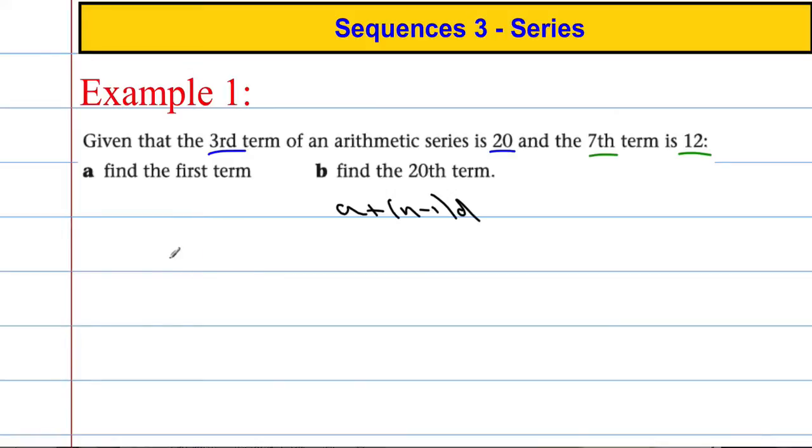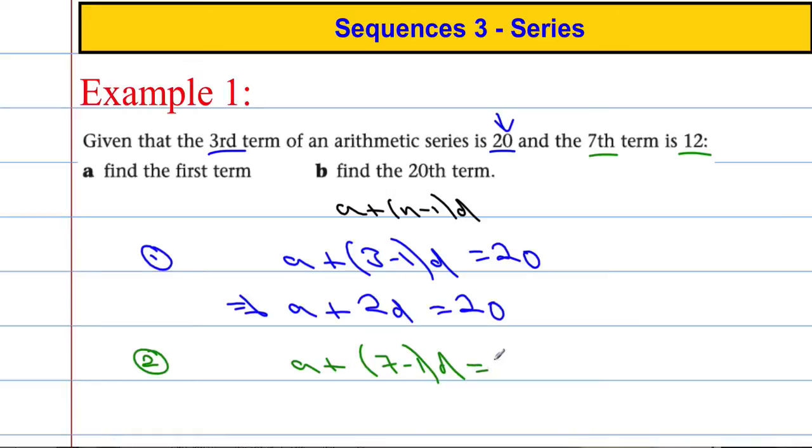I'm going to write down two equations. Equation 1: the third term is A plus N minus 1, well N for the third term is 3, so 3 minus 1 times D. That equals 20. Now I'm going to tidy this up: A plus 2D equals 20. Let's do a similar thing for the other piece of information. The seventh term is 12. So A plus 7 take away 1 times D equals 12, which implies A plus 6D equals 12.